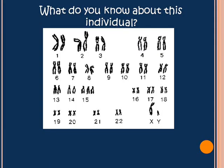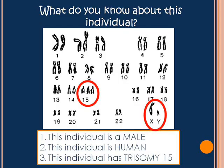Let's try a couple more karyotypes. This karyotype shows that the individual is male, that the individual is human, and that the individual has trisomy 15. There aren't any pictures of trisomy 15 because this particular trisomy is very fatal.